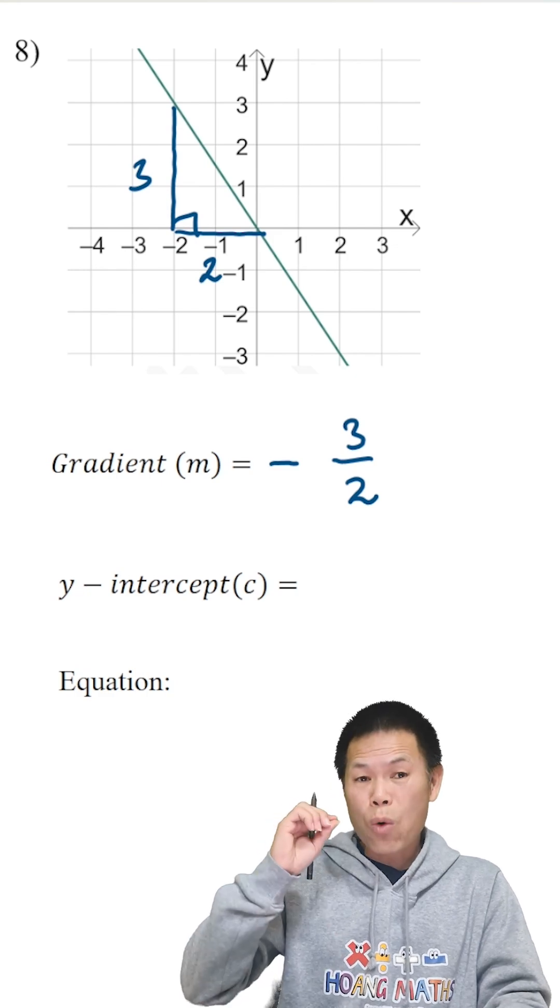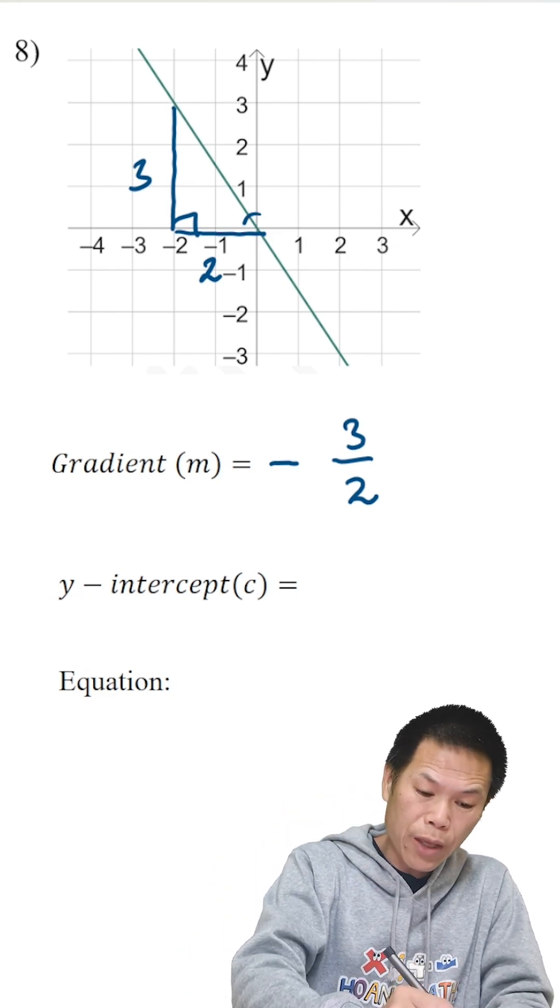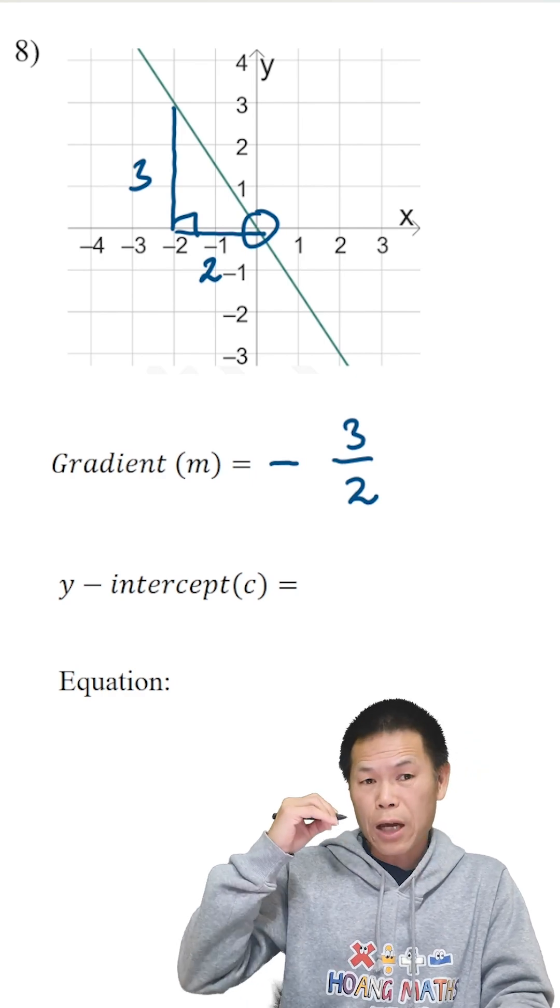That's the gradient. And the y-intercept is zero because it cuts at the origin. If you like, it cuts through at y equals zero, so that is zero.